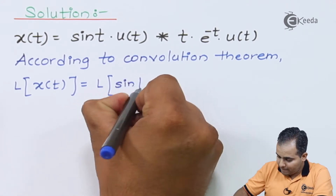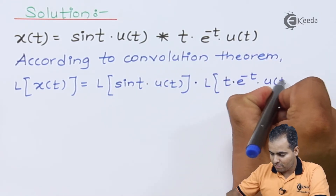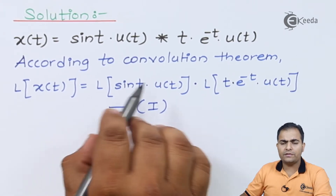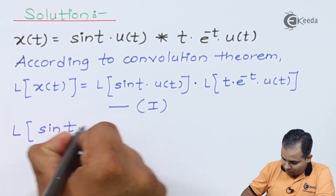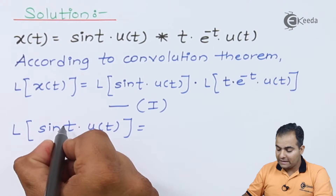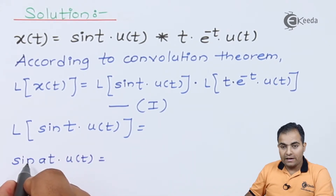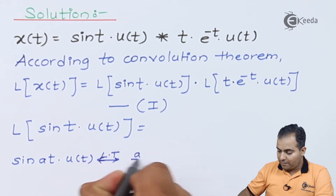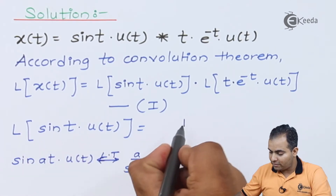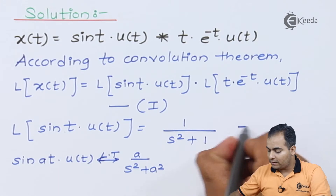First, find the Laplace transform of sin(t)·u(t). We have studied the formula: the Laplace transform of sin(at)·u(t) is a/(s²+a²). Comparing, here a = 1, so the Laplace transform of sin(t)·u(t) is 1/(s²+1). This is equation number 1.